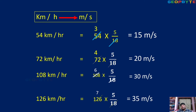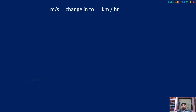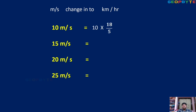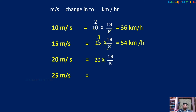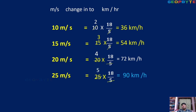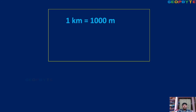Second point: meters per second converted into kilometers per hour. Meter is the small value; I want the maximum value, so multiply by 18 by 5 to get the maximum value. Example: 10 m/s into 18/5 gives 36 km/h. 15 m/s into 18/5 gives 54 km/h. 20 m/s into 18/5 — 4 cancels — gives 72 km/h. 25 m/s into 18/5 gives 90 km/h. Also: 1 kilometer equals 1000 meters. This point is important — given in examination: 1 meter equals 1/1000 kilometer.